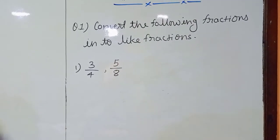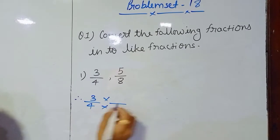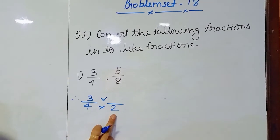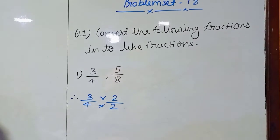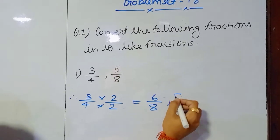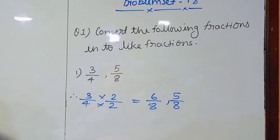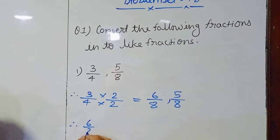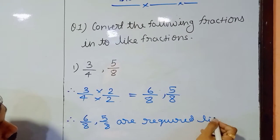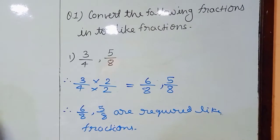The second fraction already has denominator 8, so no issue. We convert 3 upon 4: to turn 4 into 8 we multiply by 2, and we must also multiply the numerator by 2, giving 6 upon 8. The second fraction is already 5 upon 8. Now both have the same denominator, so therefore 6 upon 8 and 5 upon 8 are the required like fractions.